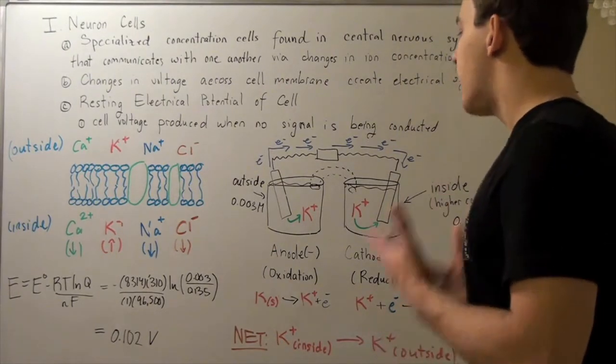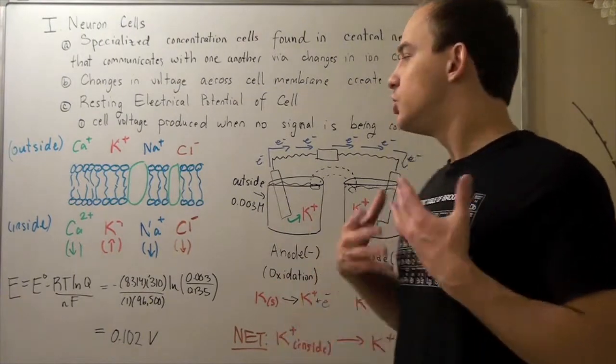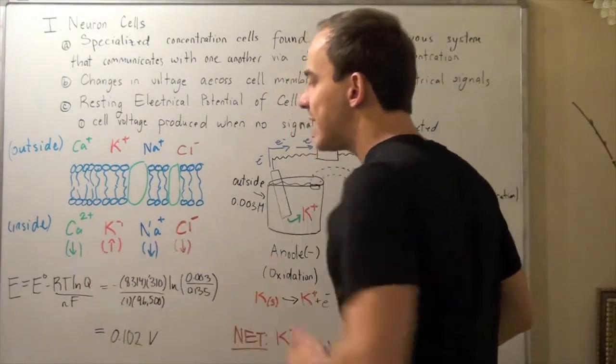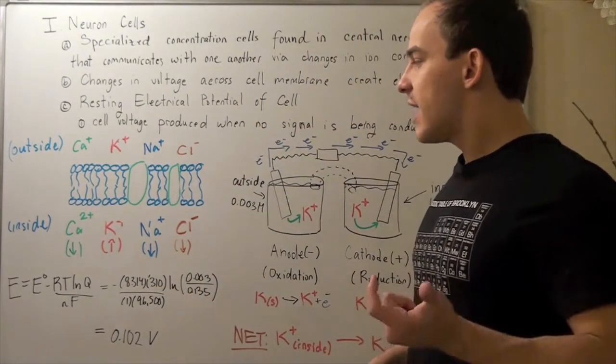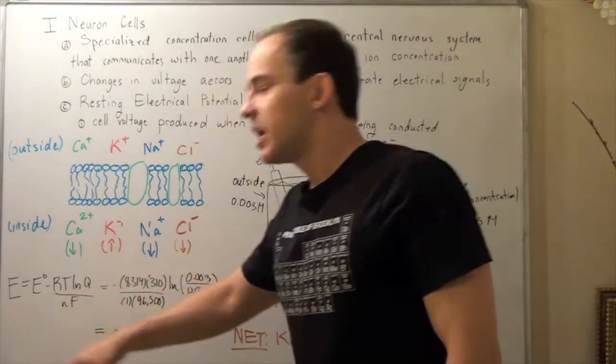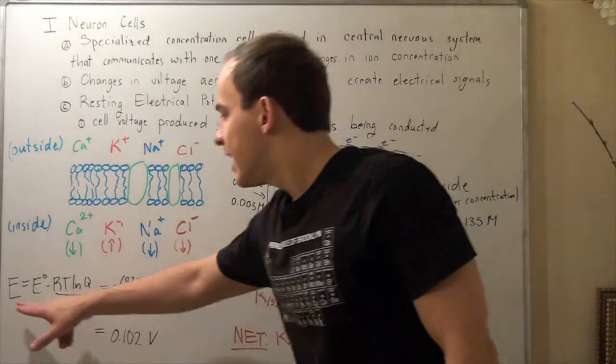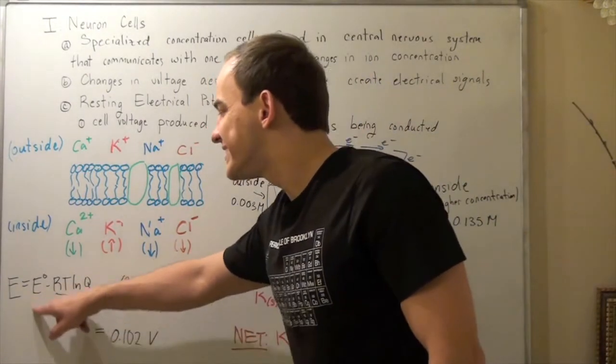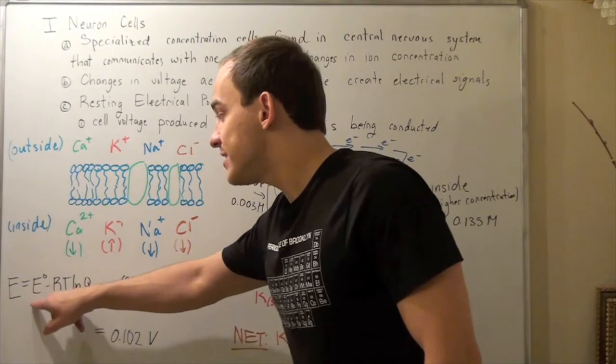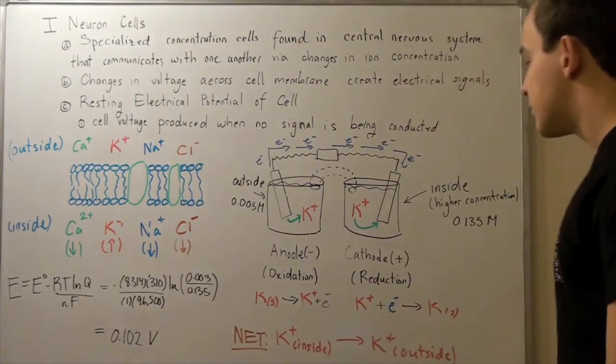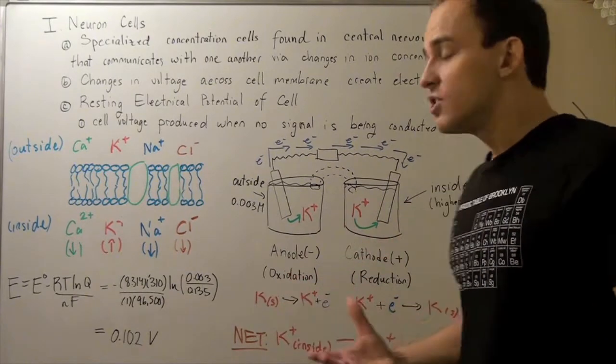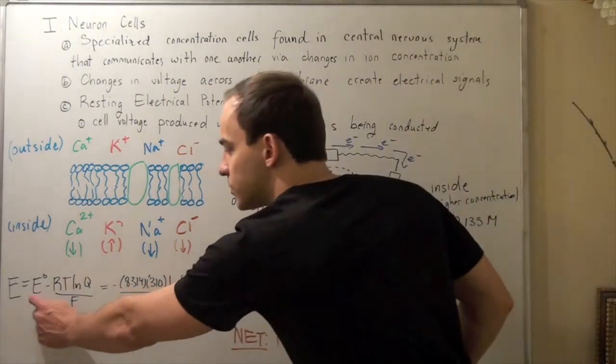So how would we find the cell voltage due to the potassium ions? Well we use the Nernst equation. What this equation says is that our cell voltage at any given concentration is equal to our standard cell voltage, but this guy is 0. We just said that the cell voltage of this reaction and this reaction are equal but opposite. So when you add them, this guy goes to 0.